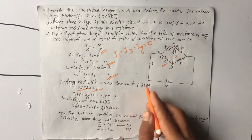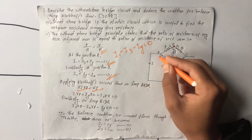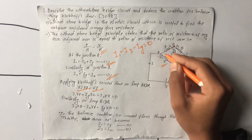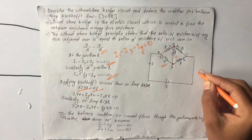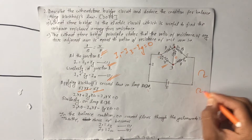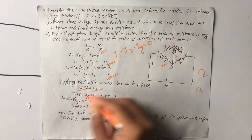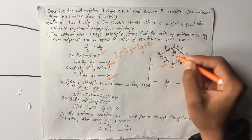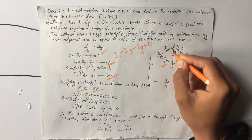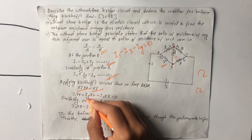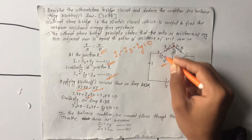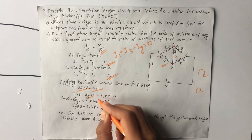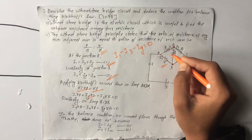There is a loop A-B-D-A. Applying Kirchhoff's second law in the clockwise positive direction: I1 into resistance P is positive (clockwise direction), plus Ig into G, and then I2 into X in the opposite direction is negative, and the EMF in this loop is zero.